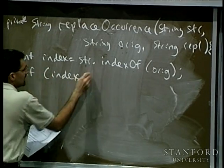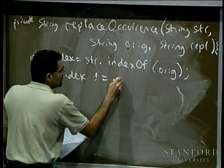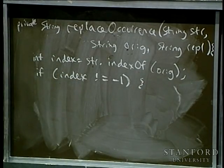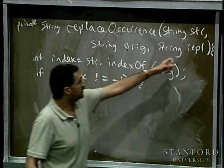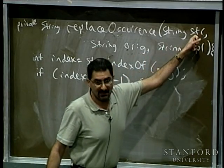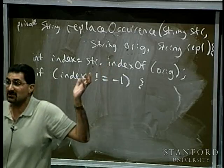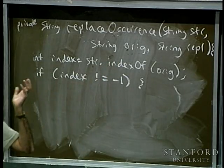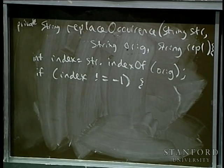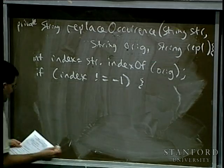If index is not equal to negative one, then I have some work to do. If it equals negative one, that means you wanted to replace this original string inside str but that original string doesn't exist — no work to do, like find and replace in your word processor when the thing you wanted to find wasn't there. In that case, I just return str unchanged.